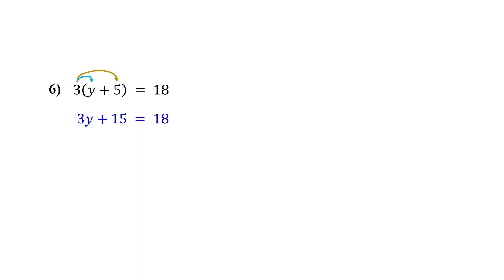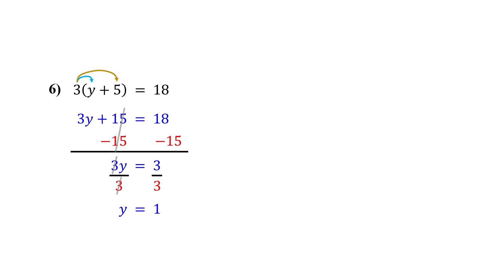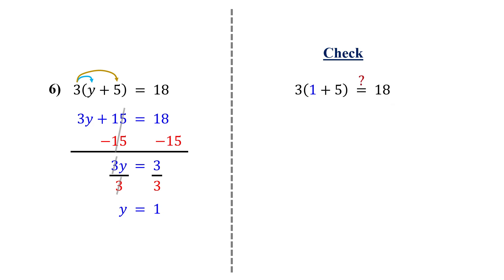So next, isolate 3y by subtracting 15 from both sides. On the left, the 15s cancel out, and we are left with 3y. On the right, 18 minus 15 is 3. Now get y by itself by dividing both sides by 3. This gives us y equals 1. Let's check it — plug in 1 for y in the original equation. Inside the parentheses, 1 plus 5 is 6. Then 3 times 6 is 18. Both sides match, so our solution is correct.